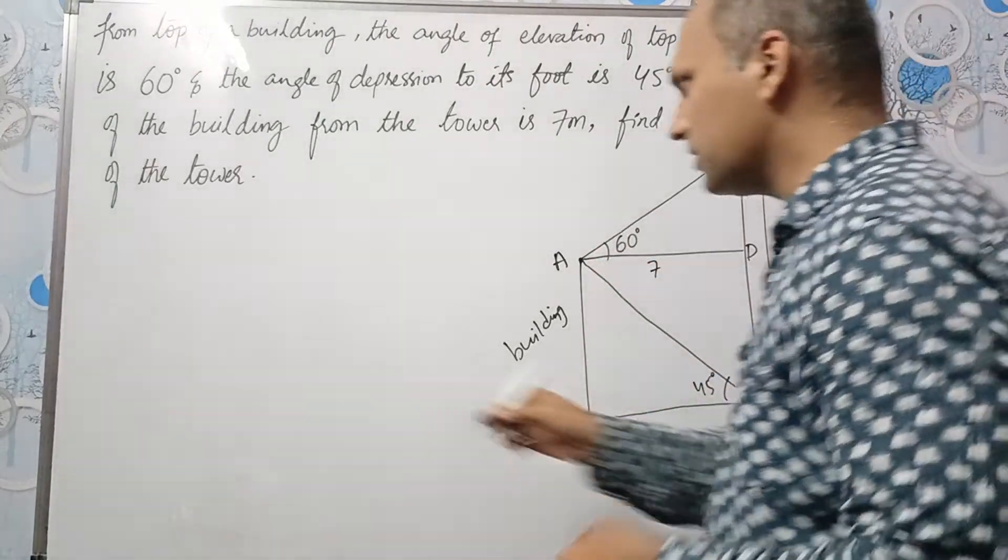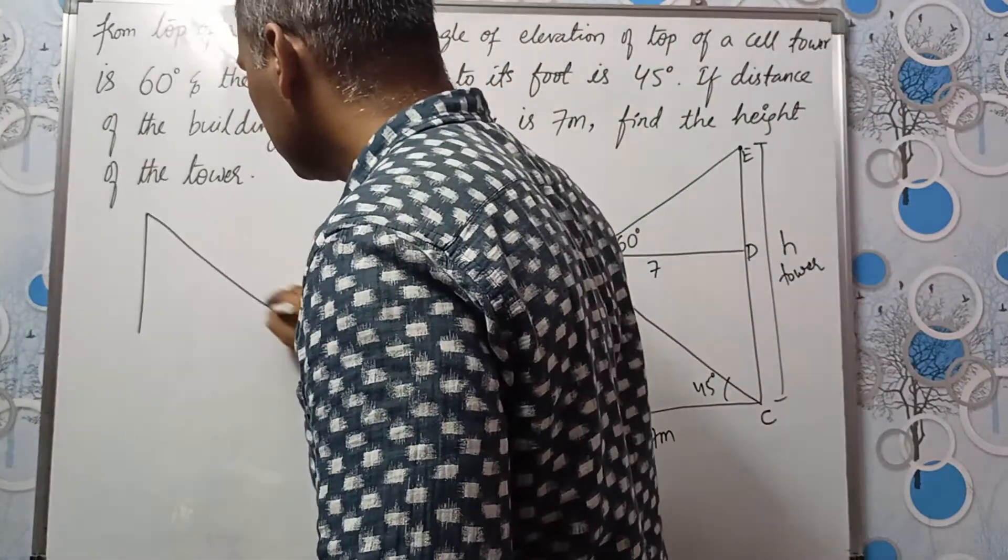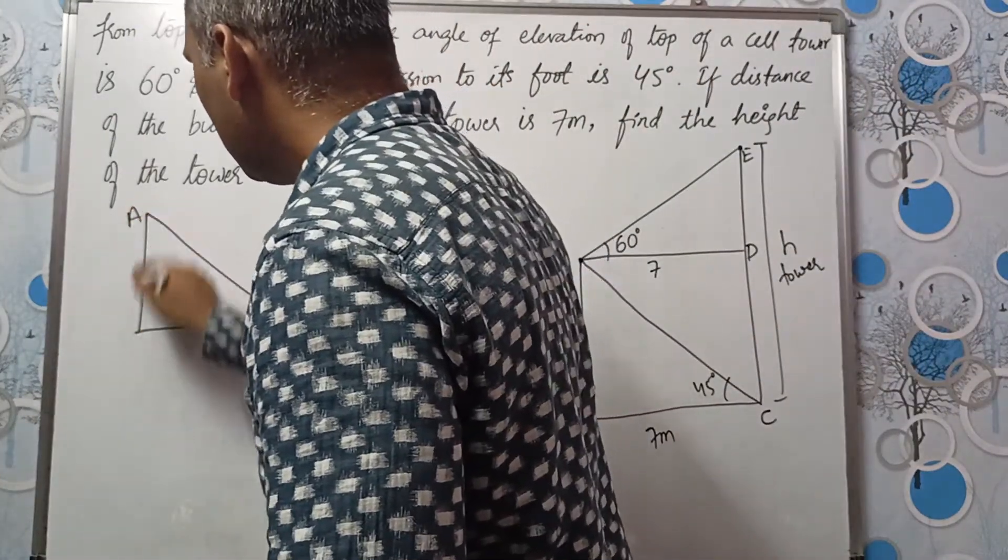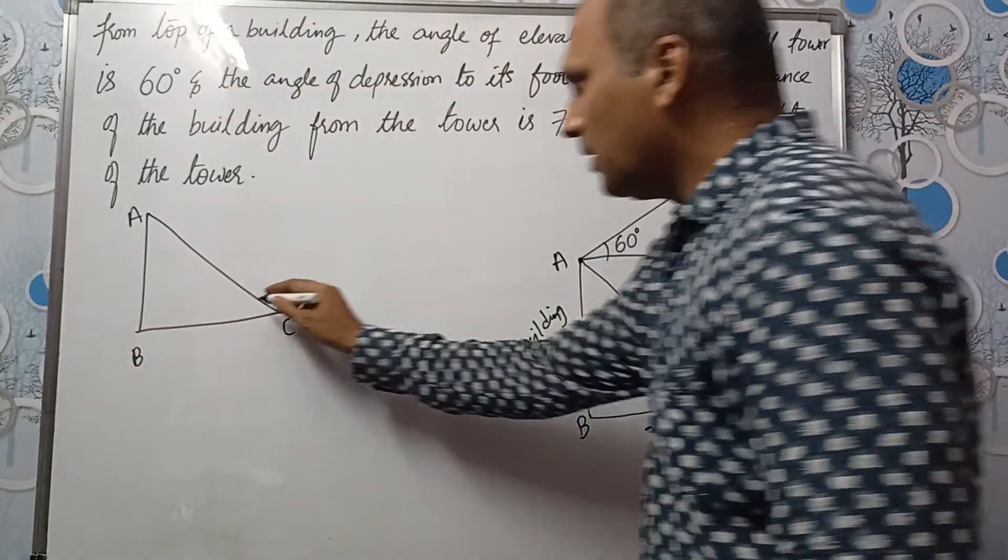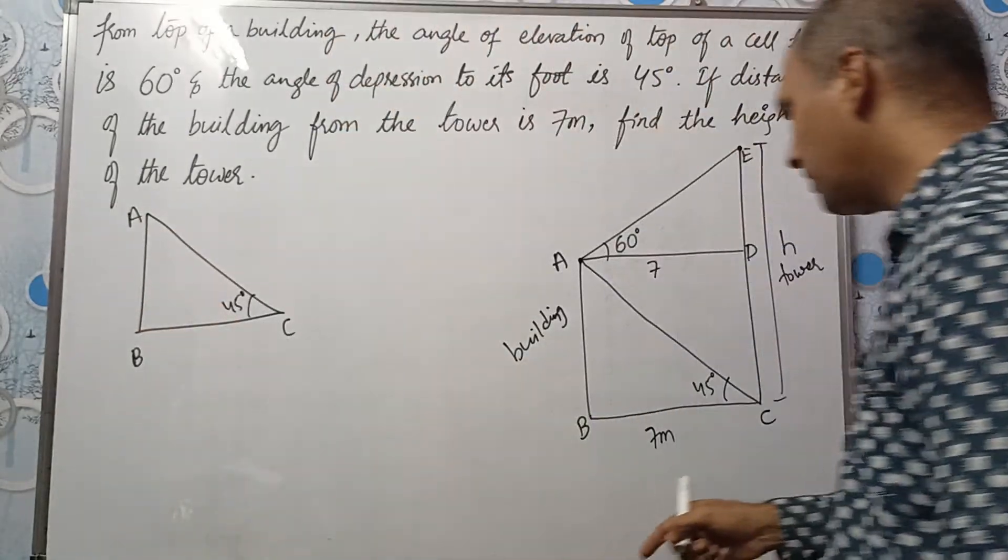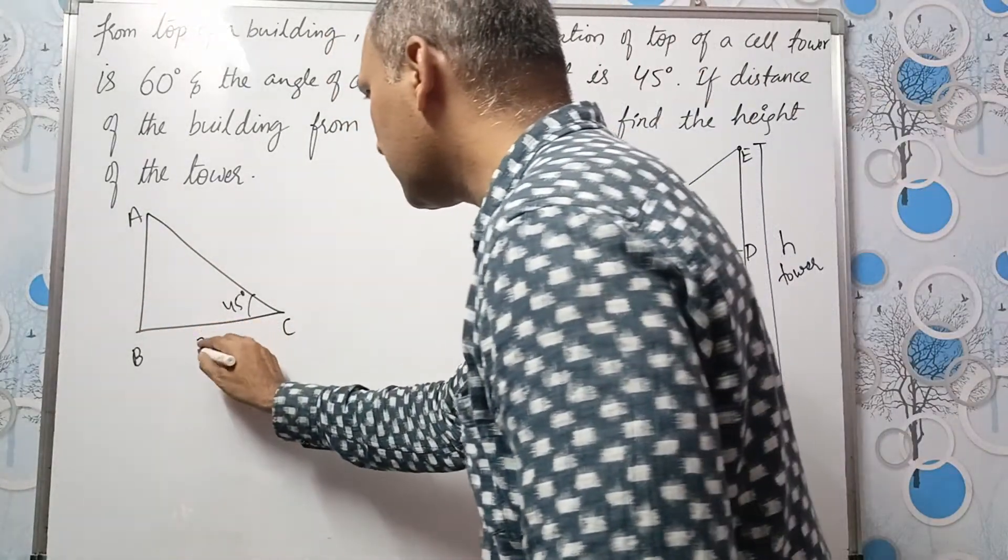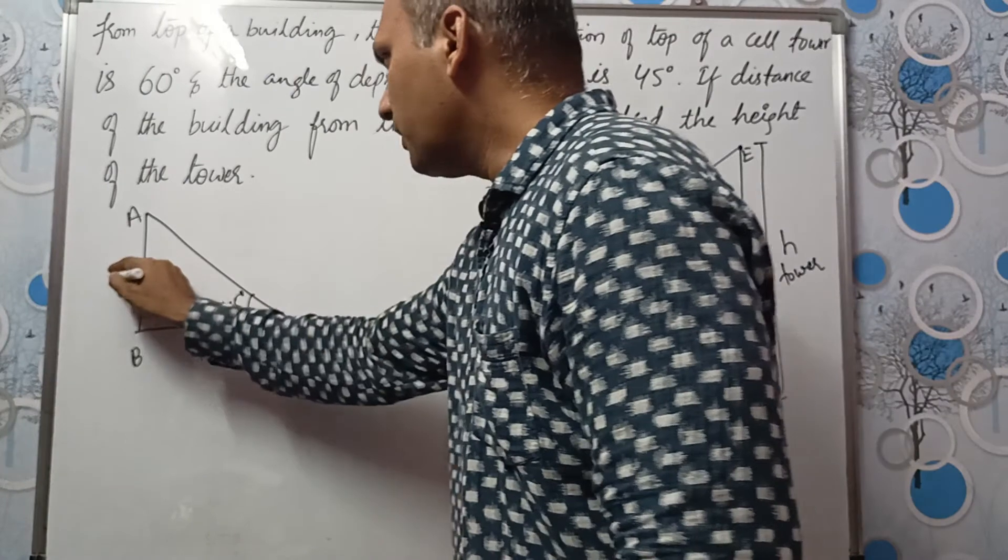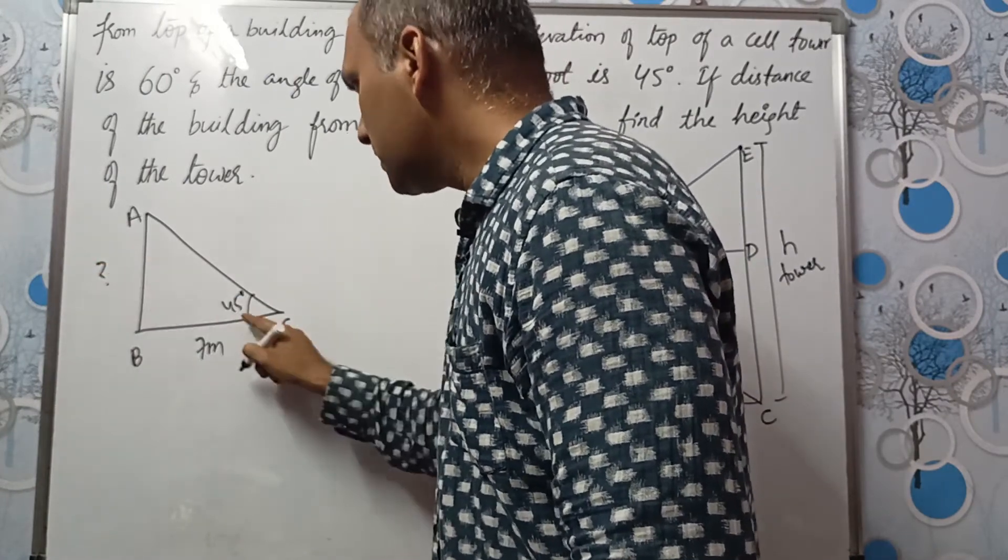Let us take this triangle ABC. A, B and C. 45 degrees here. And we don't know what is the height of the building. Let it be AB only. This is 7. We need to find this AB. AB is how much?